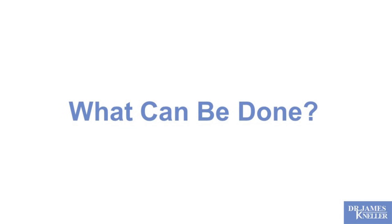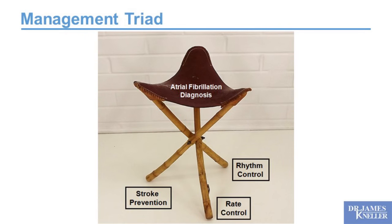For any patient, we have a management triad with three priorities. First is stroke prevention — avoiding that devastating complication. Second is rate control: when you're having atrial fibrillation, can we control your heart rate so the rhythm bothers you as little as possible? Third is rhythm control: can we stop atrial fibrillation and prevent it from recurring, maintaining you in a normal heart rhythm?